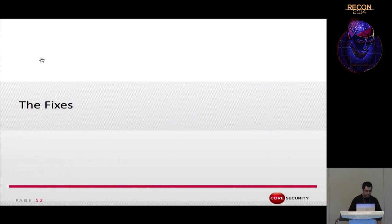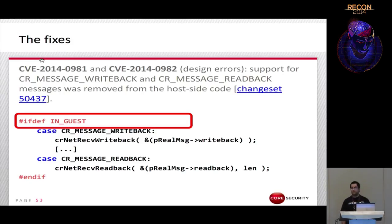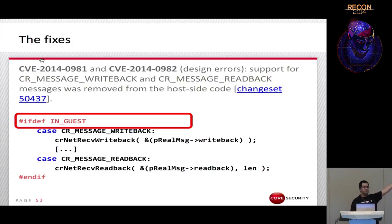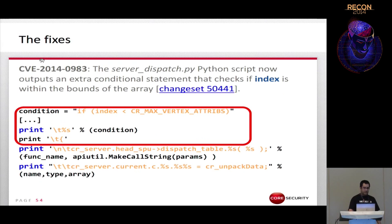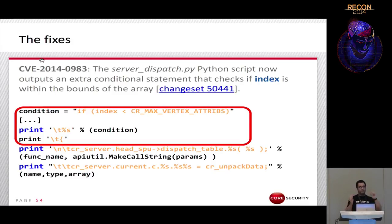How did Oracle fix these vulnerabilities? For the two network pointer vulnerabilities they added an extra #ifdef statement that removes support for network pointers from the host-side code. For the third vulnerability they modified the Python script that generates the vulnerable C code and added an extra bounds check condition ensuring the index is within the bounds of the array.